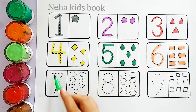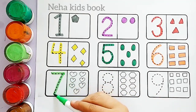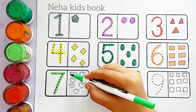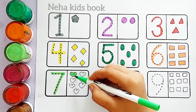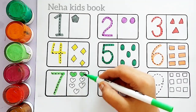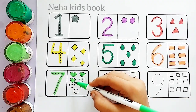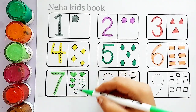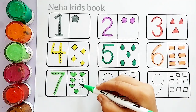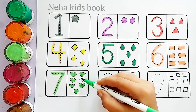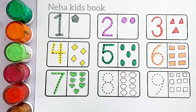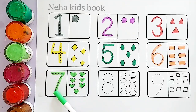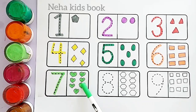Light green color, number seven. One, two, three, four, five, six, seven. Number seven: one, two, three, four, five, six, seven hearts.